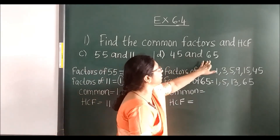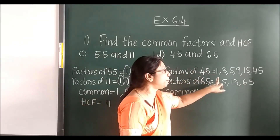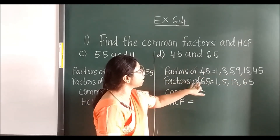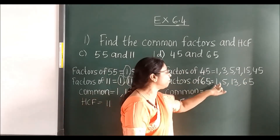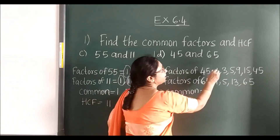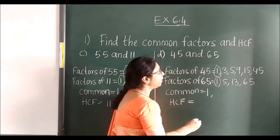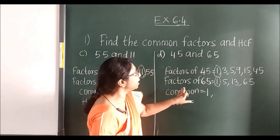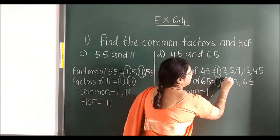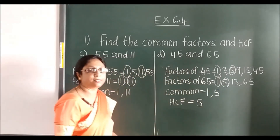Same for 45 and 65. Factors of 45: 1, 3, 5, 9, 15, 45. Factors of 65: 1, 5, 13, 65. See the common: 1 and 5. The highest is 5, so HCF is 5.